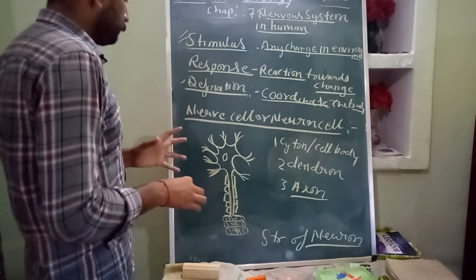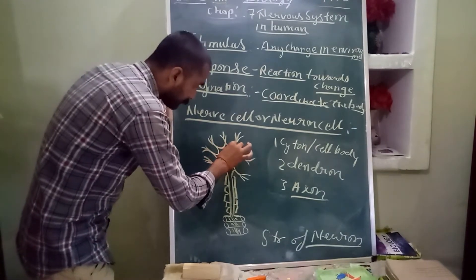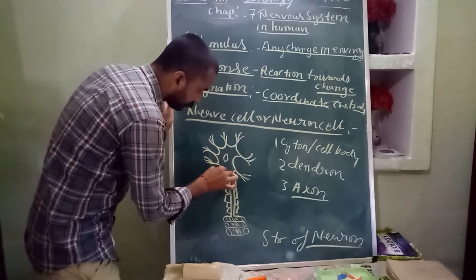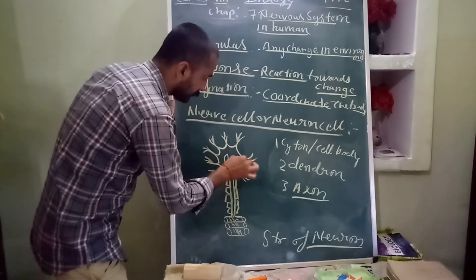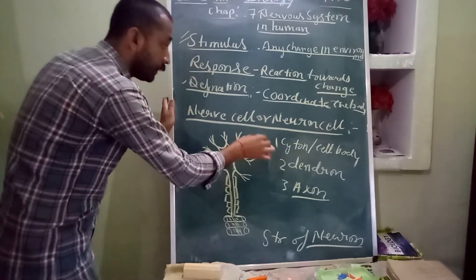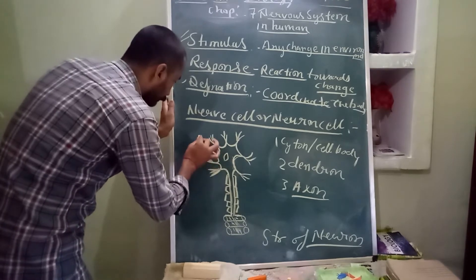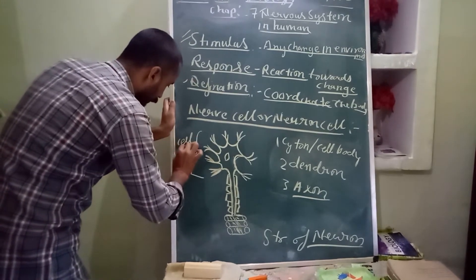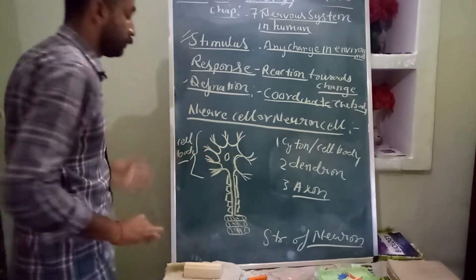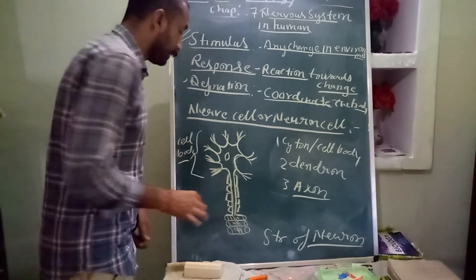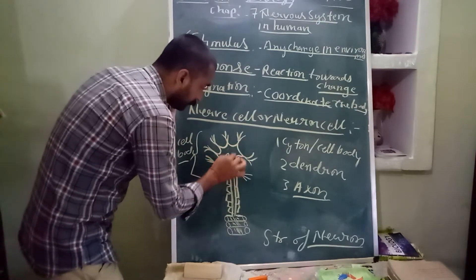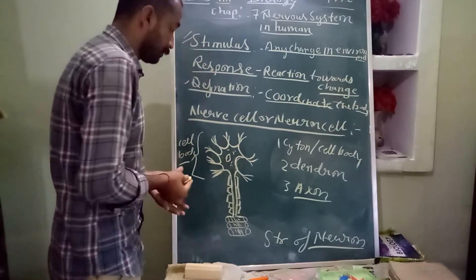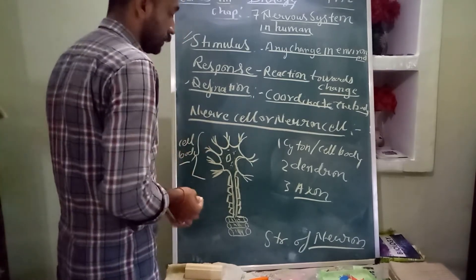So now this structure of neuron cells, and this structure is called cell body or cytone. Inside the cell body, a liquid fills inside it. This is called plasma or neuroplasm.